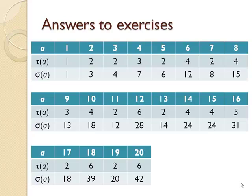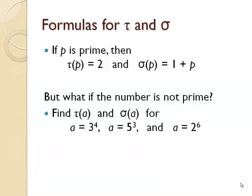Here's the table that you should find. Hopefully you did this on your own before looking at this. You should have found that if P is a prime number then tau of P is 2. There are two factors. 1 and P. Sigma of P is the sum of those. 1 plus P.